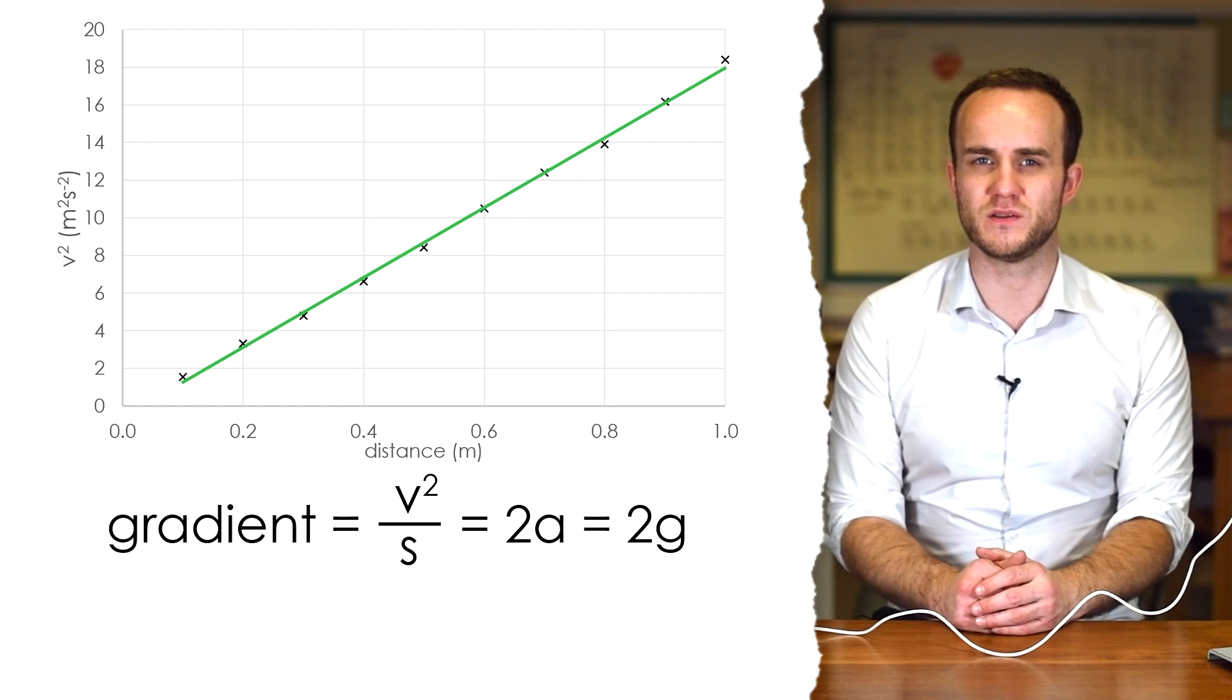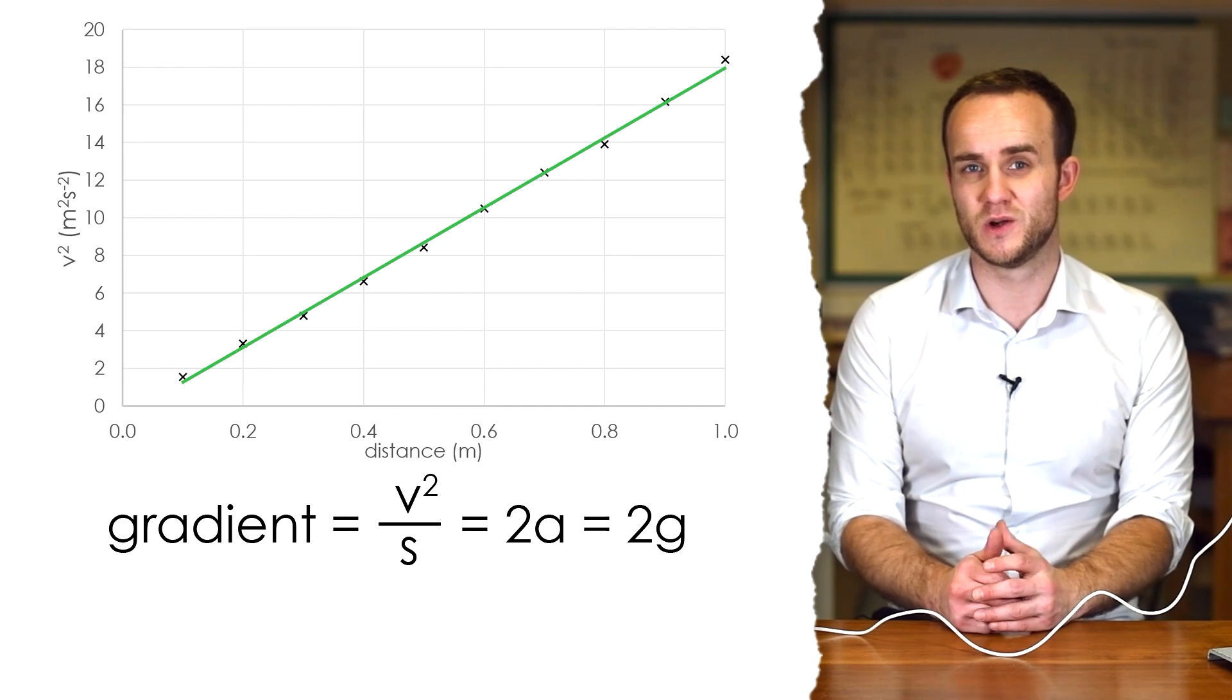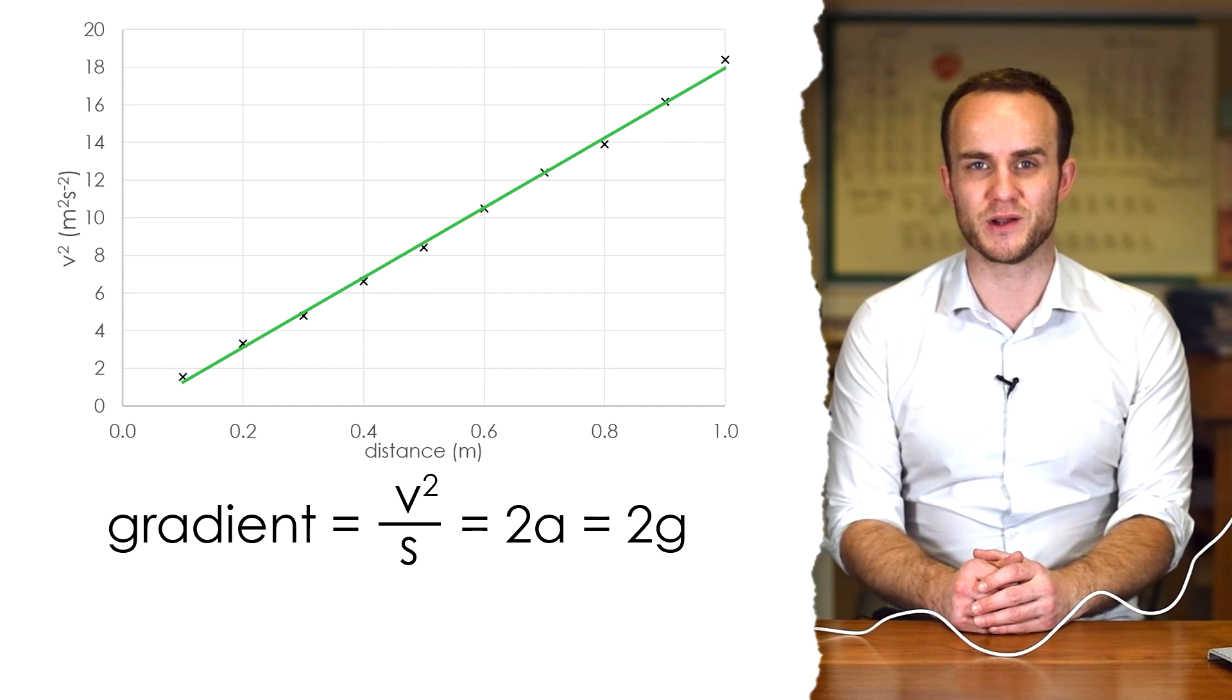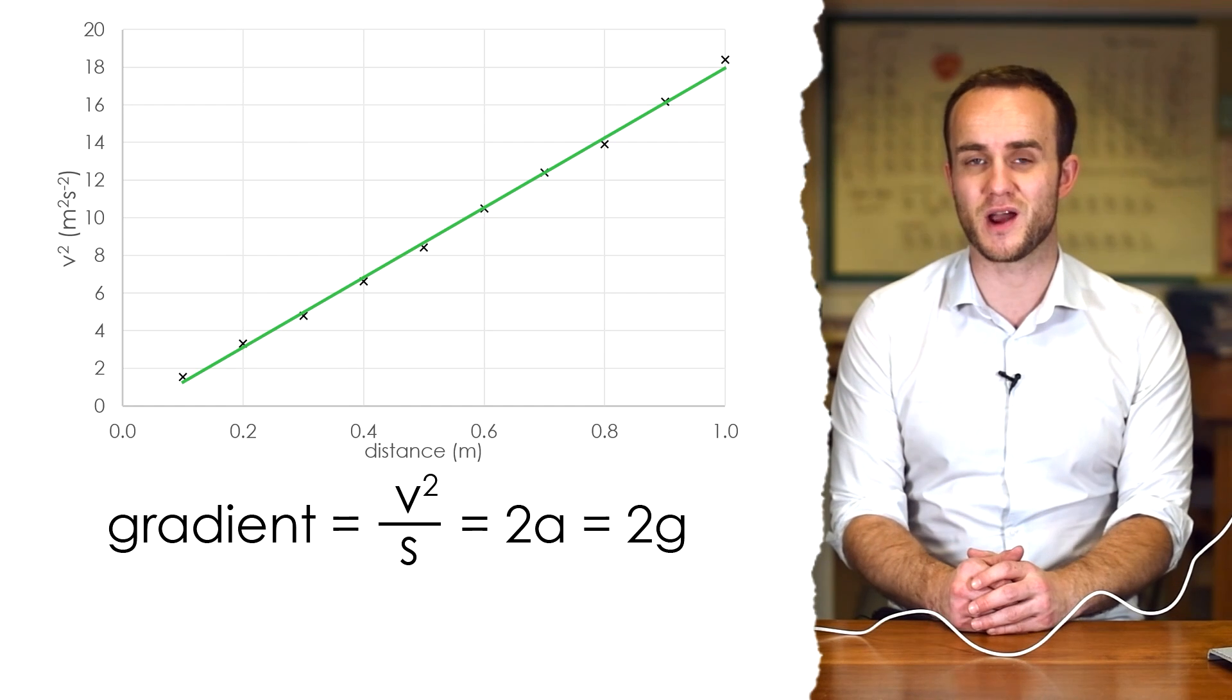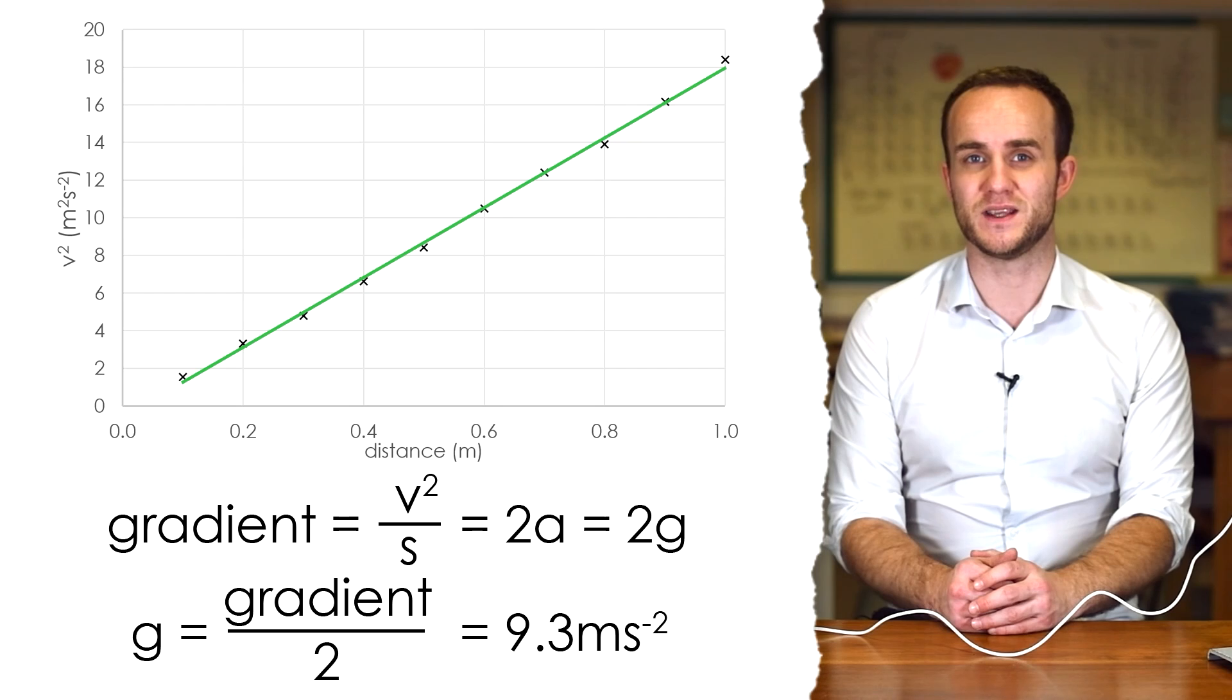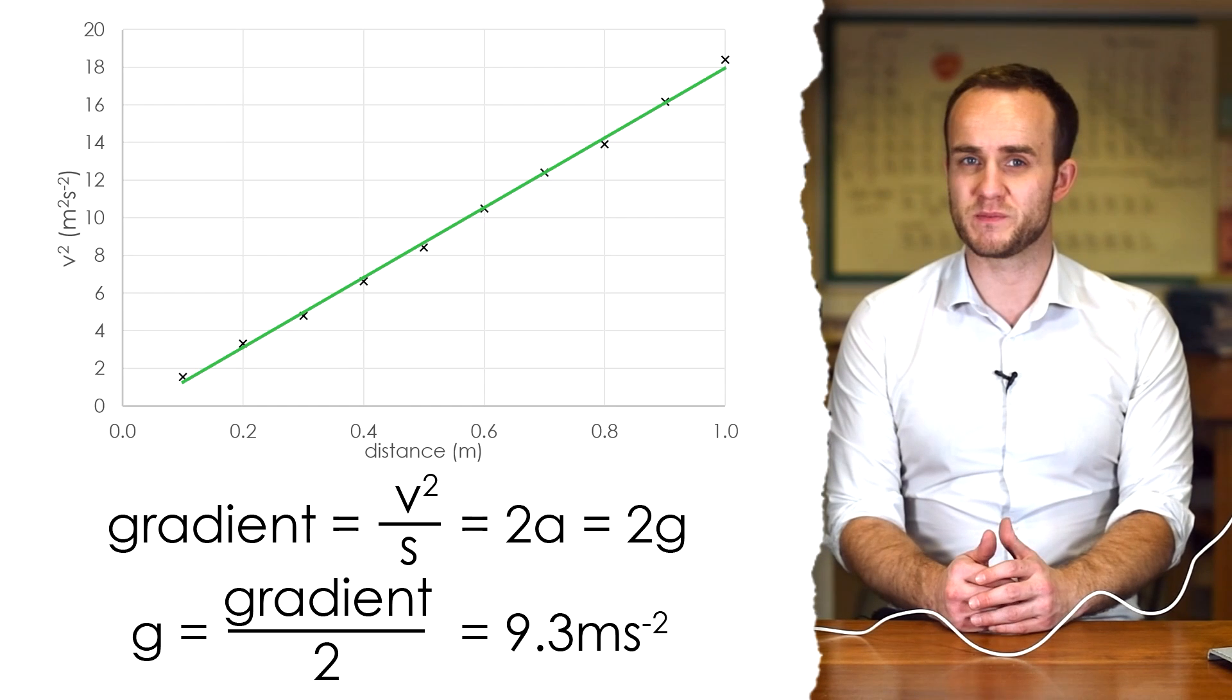Now according to the equation V² = 2AS, if we rearrange it to find V² divided by S, which is our gradient, that gives us 2A or 2G in our case because that's what we're looking for. So therefore if 18.6 is equal to two times acceleration due to gravity, then all we have to do is half it and that gives us an acceleration due to gravity of 9.3 meters per second squared.